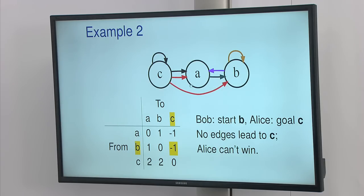It is possible that Alice can't win, such as if the goal is C, while there are no incoming edges from other positions. So she cannot win if her goal is C.